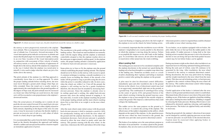The touchdown is the gentle settling of the airplane onto the landing surface. The round-out and touchdown are normally made with the engine idling and the airplane at minimum controllable airspeed so that the airplane touches down on the main gear at approximately stalling speed. As the airplane settles, the proper landing attitude is attained by application of whatever back elevator pressure is necessary. Some pilots try to force or fly the airplane onto the ground without establishing the proper landing attitude — the airplane should never be flown onto the runway with excessive speed. A common technique for making a smooth touchdown is to focus on holding the wheels a few inches off the ground as long as possible using the elevators while the power is smoothly reduced to idle.